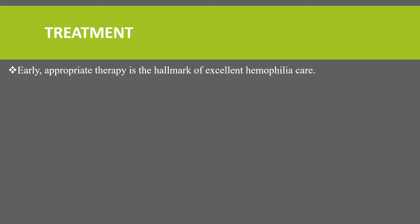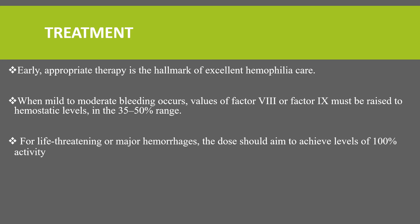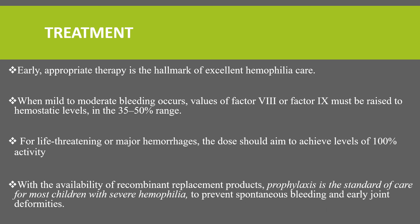Regarding treatment, early and appropriate therapy is the hallmark of excellent hemophilia care. When mild to moderate bleeding occurs, factor levels must be raised to a hemostatic level of around 35 to 50 percent. For life-threatening hemorrhage, the dose should be aimed to achieve 100 percent activity. With the availability of recombinant replacement products, prophylaxis is currently the standard of care for most children with severe hemophilia, to prevent spontaneous bleeding and early joint deformities.